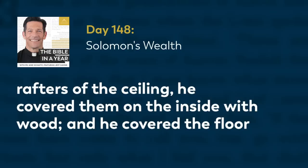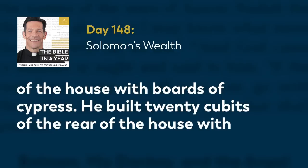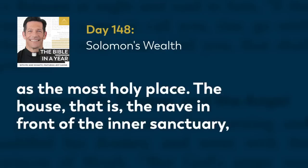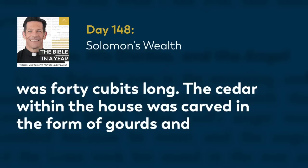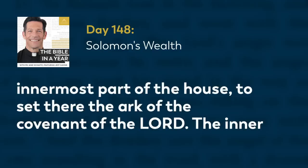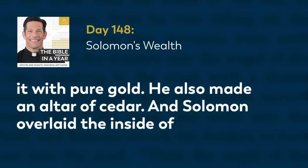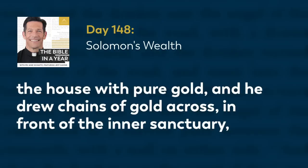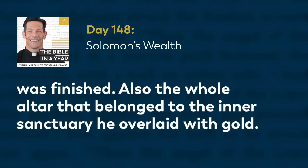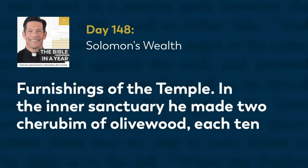He lined the walls of the house on the inside with boards of cedar from the floor to the rafters of the ceiling. He covered them on the inside with wood, and he covered the floor of the house with boards of cypress. He built 20 cubits of the rear of the house with boards of cedar from the floor to the rafters, and he built this within as an inner sanctuary, as the most holy place. The house, that is the nave in front of the inner sanctuary, was 40 cubits long. The cedar within the house was carved in the form of gourds and open flowers — all was cedar, no stone was seen. The inner sanctuary he prepared in the innermost part of the house to set there the ark of the covenant of the Lord. The inner sanctuary was 20 cubits long, 20 cubits wide, and 20 cubits high, and he overlaid it with pure gold. He also made an altar of cedar, and Solomon overlaid the inside of the house with pure gold, and he drew chains of gold across in front of the inner sanctuary and overlaid it with gold. He overlaid the whole house with gold until all the house was finished. Also the whole altar that belonged to the inner sanctuary he overlaid with gold.